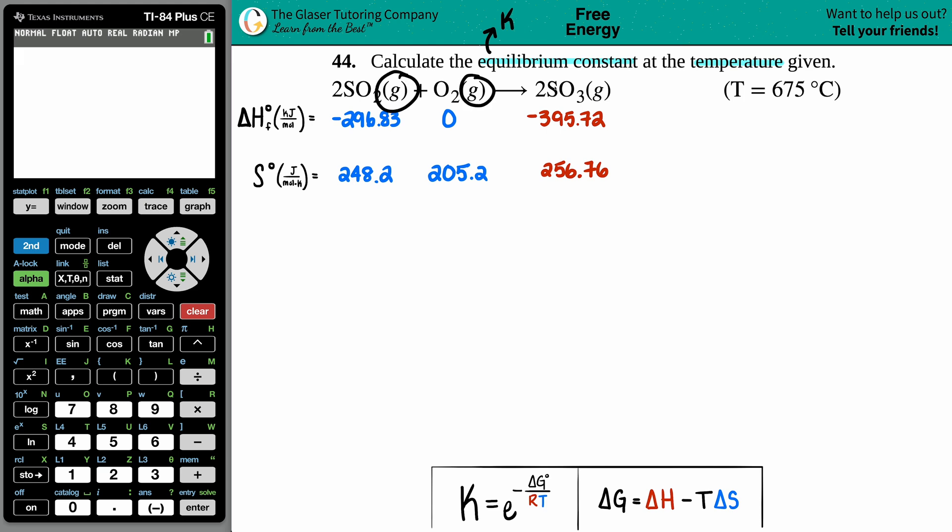Because they're all gases and gases have pressures - Kp for pressure. It doesn't matter because there's only really one formula that links an equilibrium constant K with temperature, and that's this formula. Capital K equals e raised to the negative ΔG over RT.